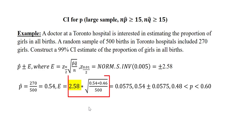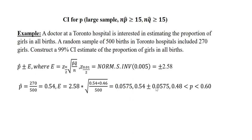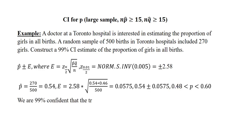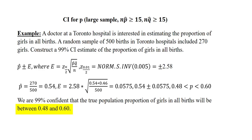My Z alpha over 2 is 2.58 and my N is 500. When I put all of that together into the formula, I will get a margin of error of 0.0575. I will add the margin of error to the sample proportion 0.54 to get the upper limit, which is 0.60. And then I will subtract the margin of error from the sample proportion, which gives me 0.48 — both to two decimal places. We can thus conclude that we are 99% confident that the true population proportion of girls in all births will be between 0.48 and 0.60.